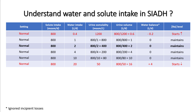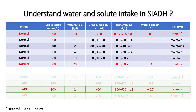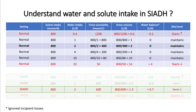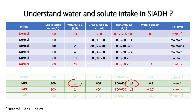In an SIADH patient, urine osmolality is high — for example, 600. Eating 800 mOsm, he makes 1.3 liters of urine. Drinking 2 liters means he is still in a positive fluid balance of +0.7, so his sodium worsens. Placing him on 1 liter fluid restriction, he still makes 1.3 liters of urine but is now in a negative water balance, and his sodium starts rising.